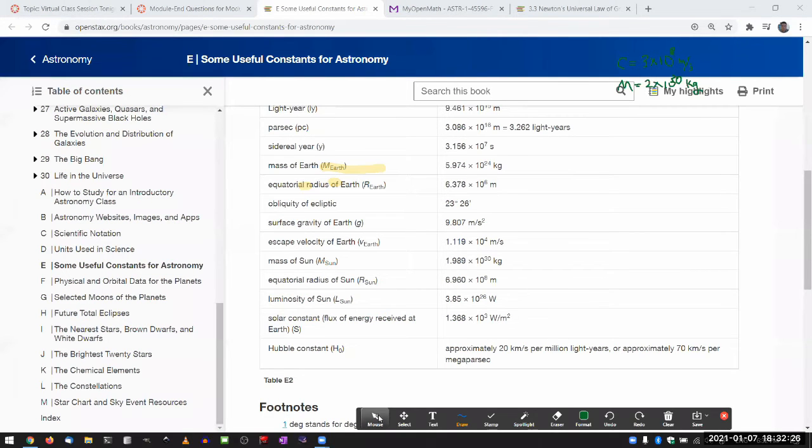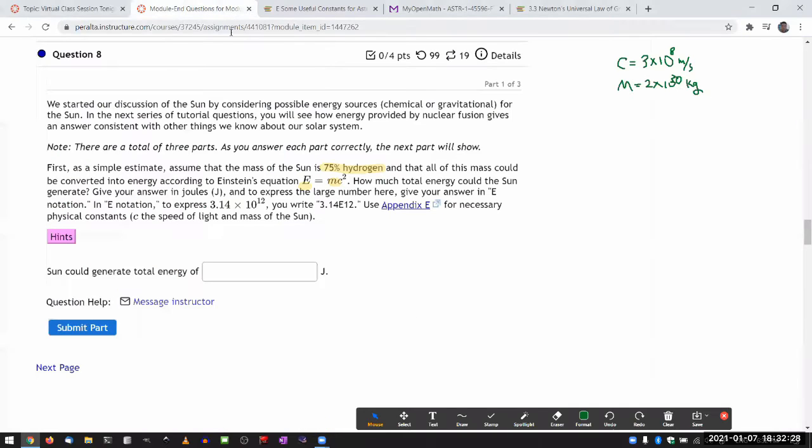And once I switch screen, all of that should be visible. Let me rewrite 10 to the 30. That's so illegible. So 2 times 10 to the power of 30. Okay. So those are the basic constants I'm starting from.